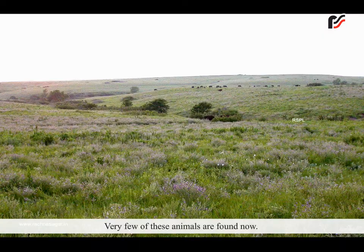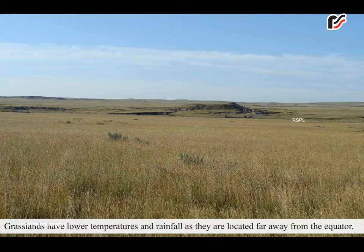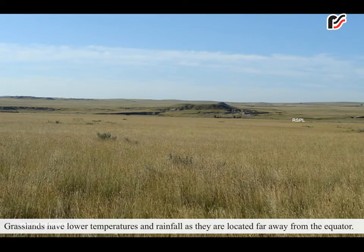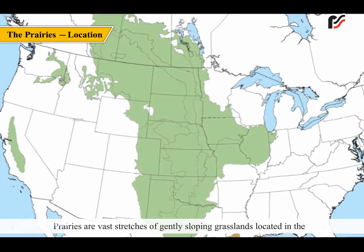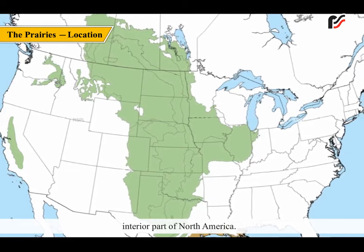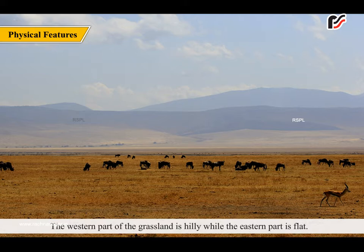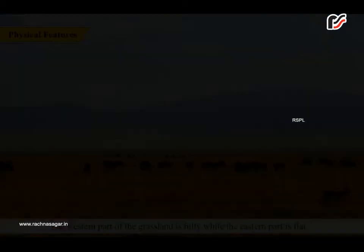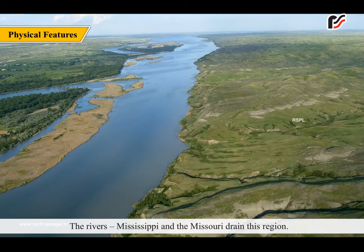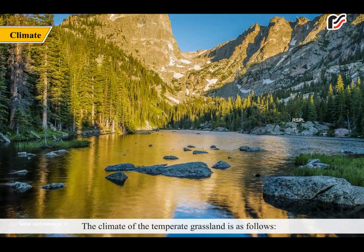Very few of these animals are found now. Grasslands have lower temperatures and rainfall as they are located far away from the equator. Prairies are vast stretches of gently sloping grasslands located in the interior part of North America. They include the southern part of Canada and central United States. The western part is hilly, while the eastern part is flat. The rivers Mississippi and Missouri drain this region.